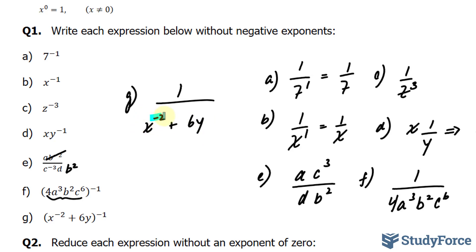Still, we have x to the power of negative 2. So this part will be written as 1 over, this becomes 1 over x to the power of 2, plus 6y. Of course, you can take this a step further by combining these two terms, but this is good enough for this question.